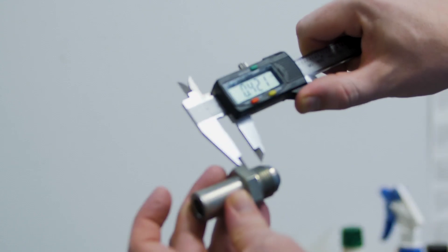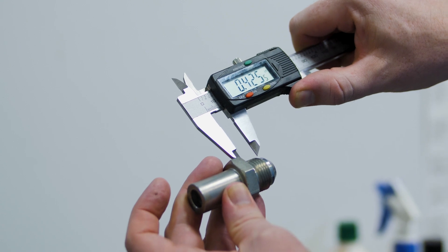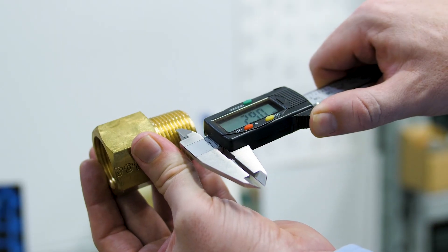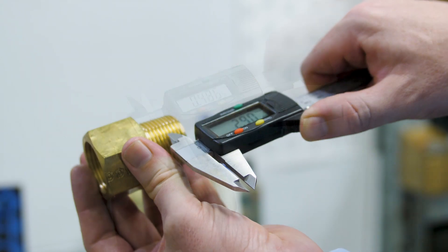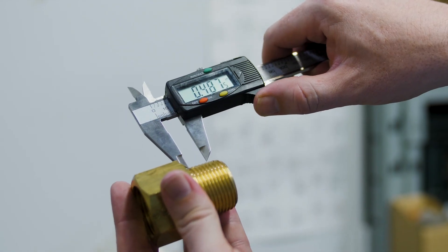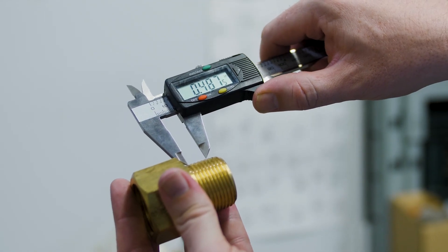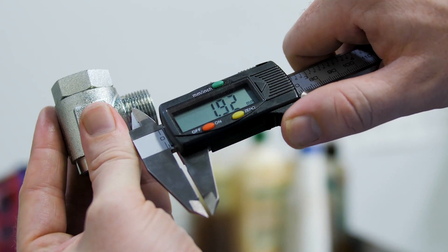One important difference in British and metric threads is how the distance between thread crests are measured. British threads are measured by the number of threads over an inch, also known as TPI, while metric threads are measured by the actual distance between thread crests in millimeters.